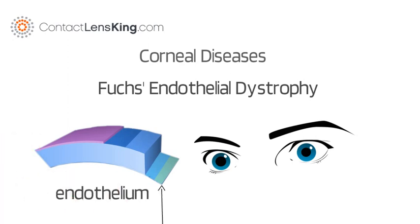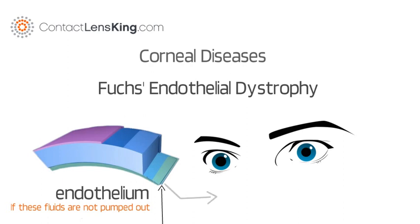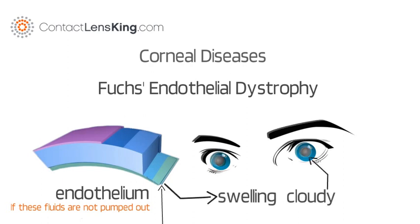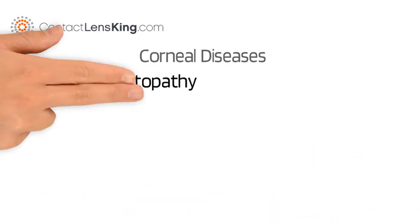The inner cell layer is called the endothelium, which pumps fluid out of the cornea, keeping it thin and clear. If this fluid is not pumped out, the cornea may experience swelling, causing it to become cloudy and decreasing a person's vision.